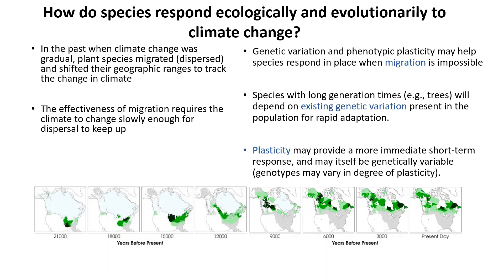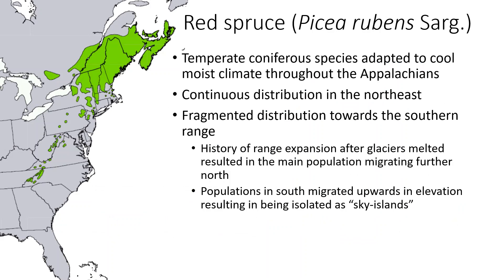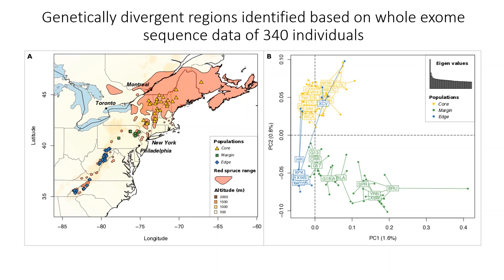The focus species for this study is Red Spruce or Picea rubens, found along Northeast America. It is a temperate coniferous species adapted to cold, moist climate throughout the Appalachians, with continuous distribution towards its northern range and fragmented distribution towards the southern range. The fragmented distribution at the south is due to the history of range expansion after the glaciers melted, resulting in populations either moving northwards in latitude or upwards in altitude, resulting in sky islands. For this study, 340 individuals were selected along its range. The northern continuous distribution is known as the core, the southern fragmented distribution as the range edge, and the region in between is known as the margin, which is also known to hybridize with black spruce.